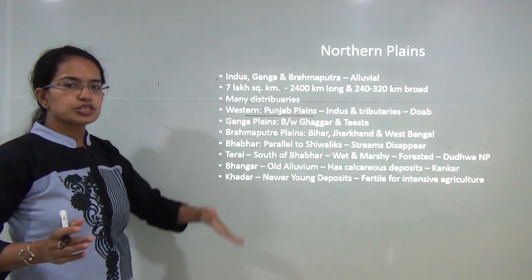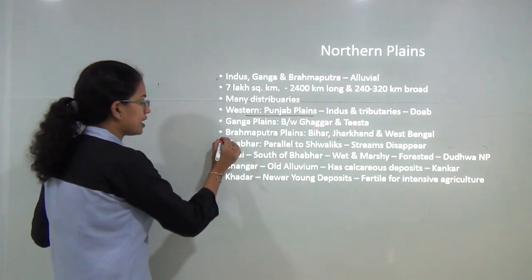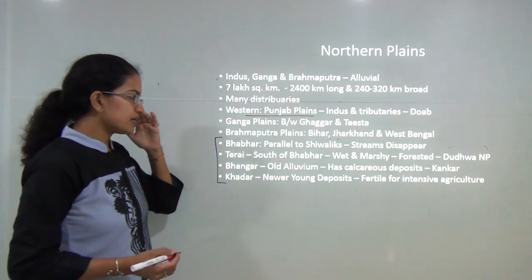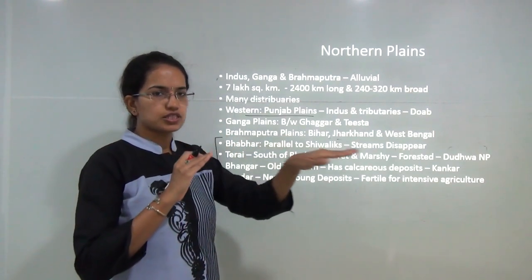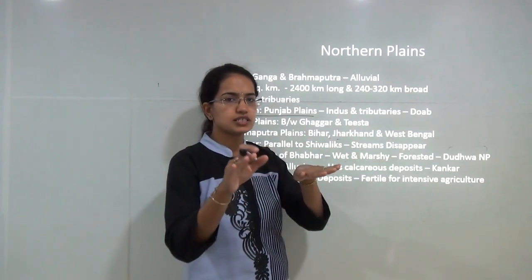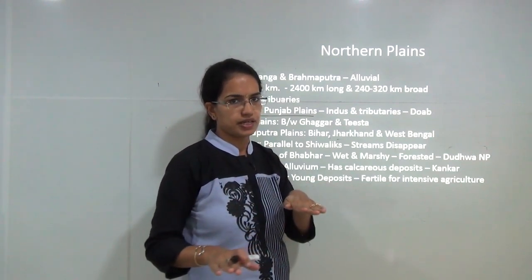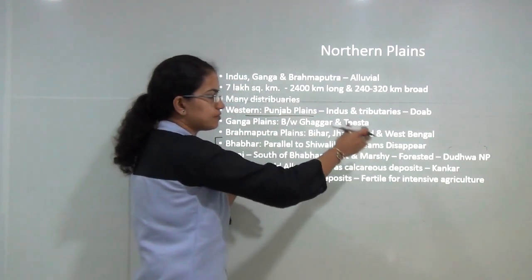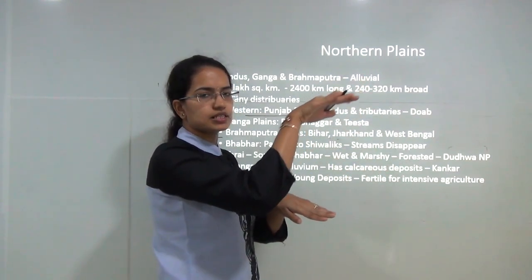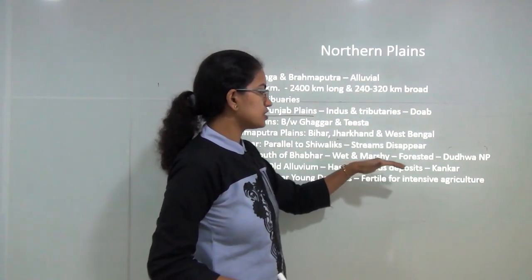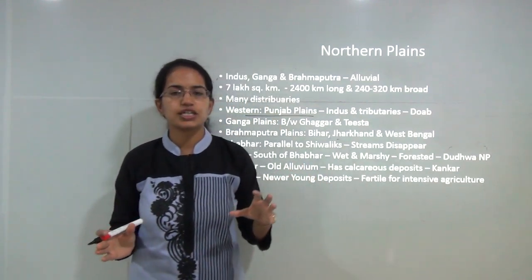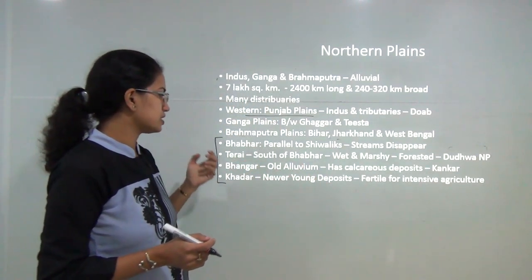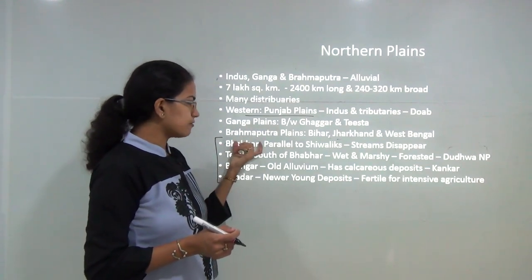Moving north to south again, the northern plains are classified into four sections. The northernmost is Bhabar, which runs parallel to the Shivaliks — a region where streams disappear underground. Next is the Tarai belt where those disappeared streams re-emerge, making this region wet and marshy, resulting in huge forest cover.